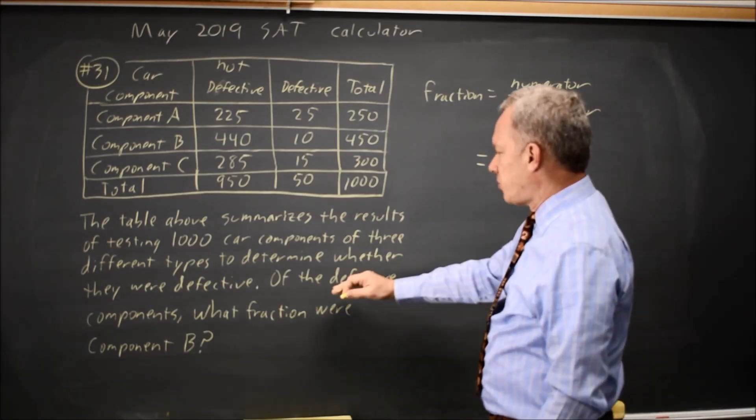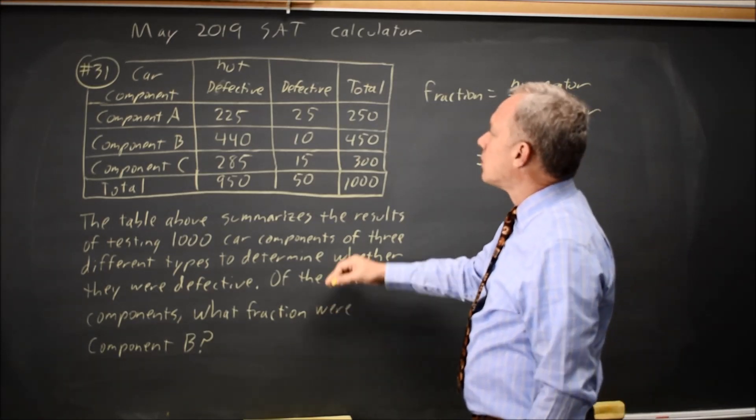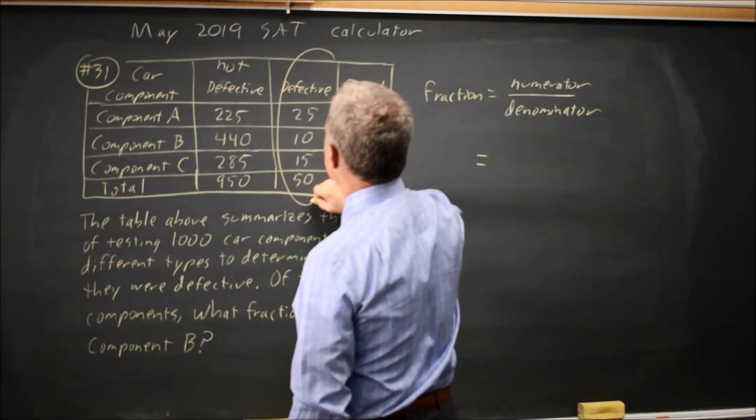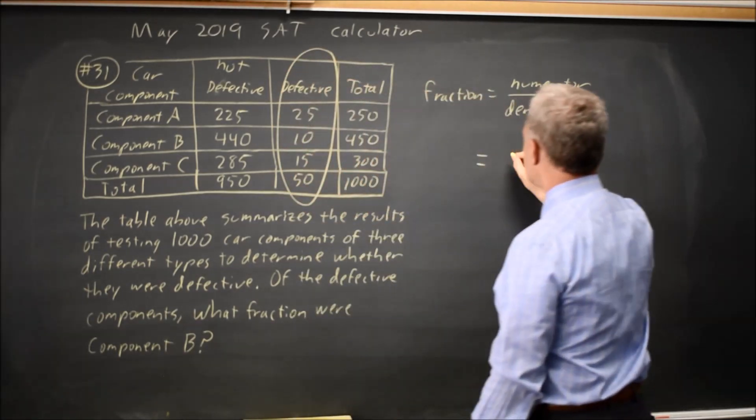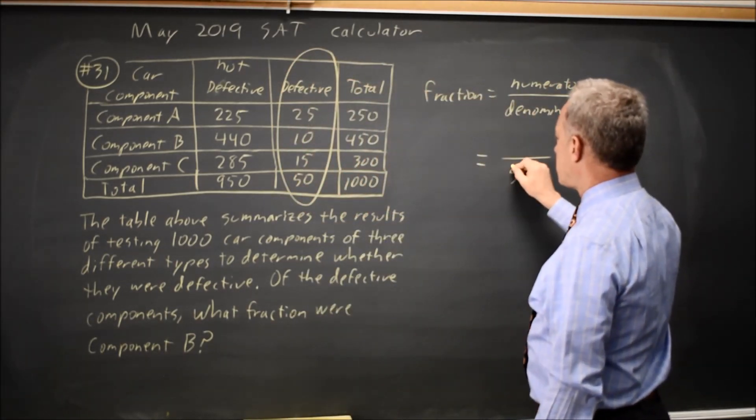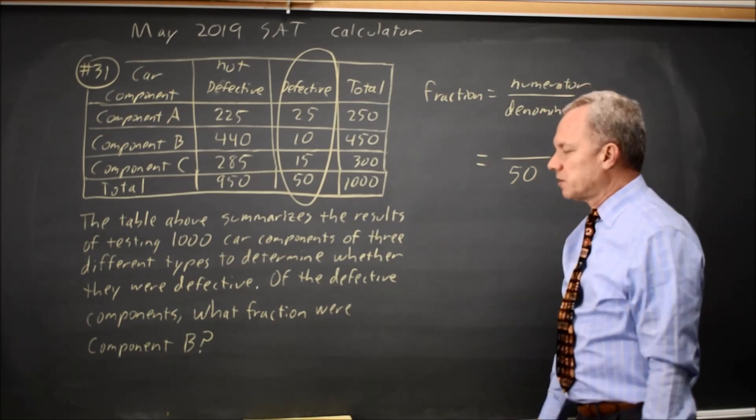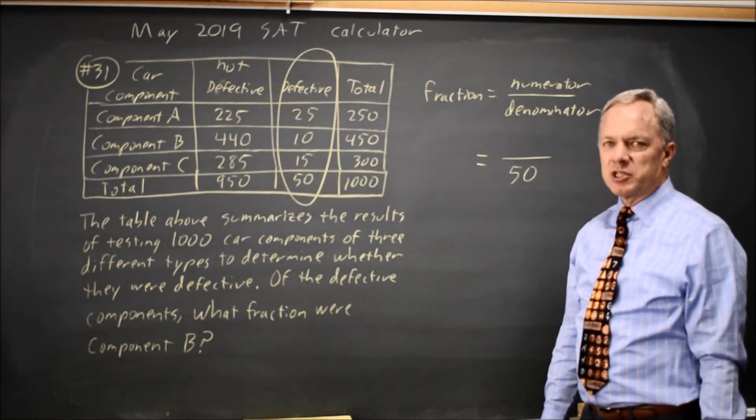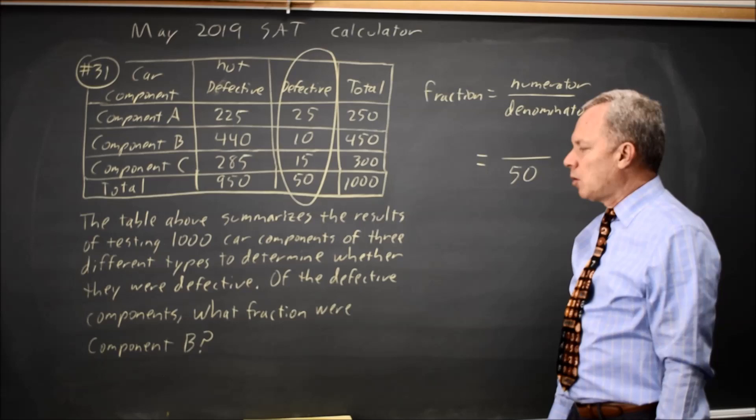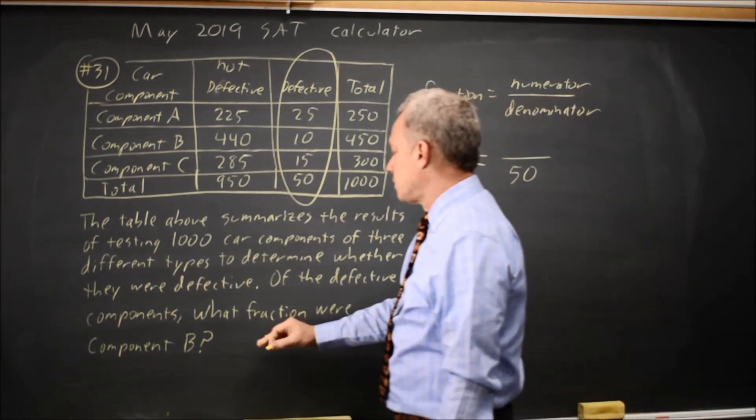So in this case, of the defective components, our denominator will be all defective components, and there's a total of 50 of those, so our denominator is 50. And then our numerator is among those that might have been chosen under the words of the problem, which ones count for the probability you're looking for.